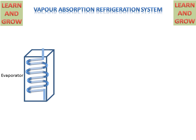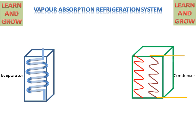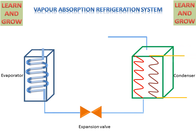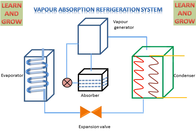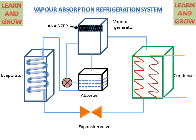The main parts of the Vapor Absorption Refrigeration System are: Evaporator, Condenser, and Expansion Valve. These are connected with the help of pipes, and a Vapor Generator with Absorber. In the Absorber are Ammonia and Water, and this is connected with the Evaporator. In the Vapor Generator, an Analyzer and Rectifier are present between the Vapor Generator and Condenser.